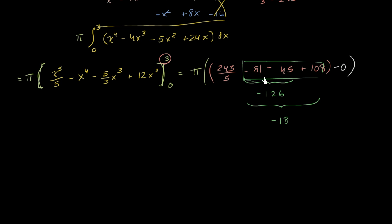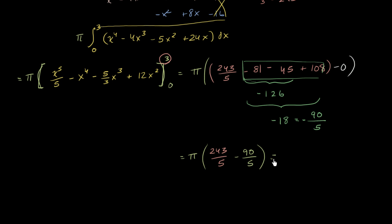So now we just have to write negative 18 as a fraction over 5: negative 18 is negative 90 over 5. So the whole thing simplifies to pi times 243 over 5 minus 90 over 5, which equals pi times 153 over 5. Or we can write this as 153π over 5.